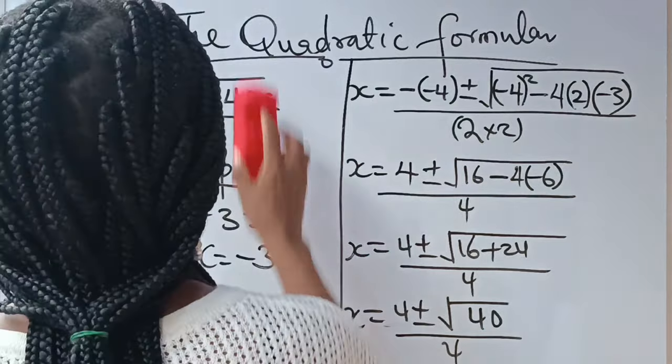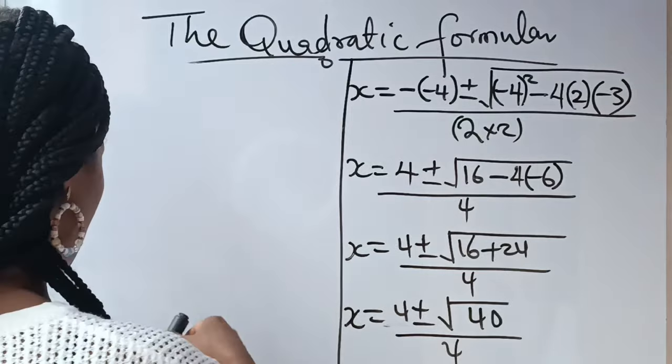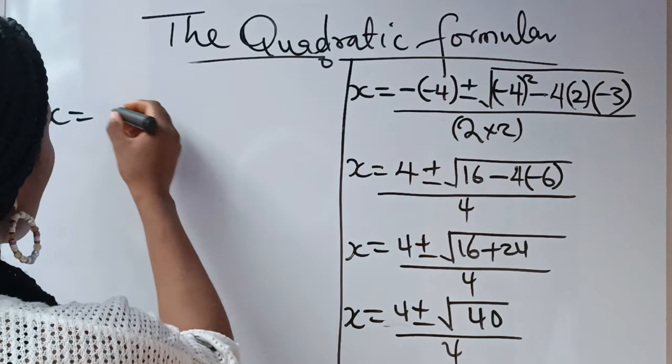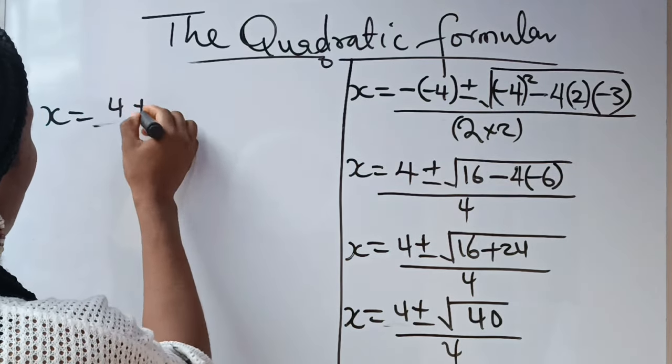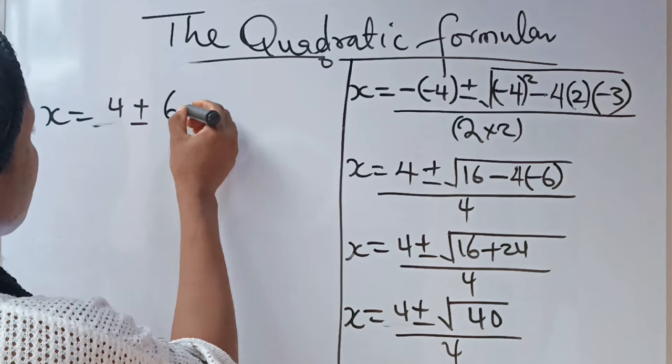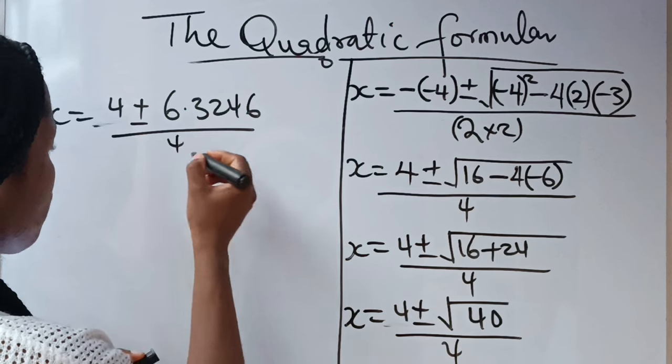Your x = 4 ± 6.3246, everything divided by 4.